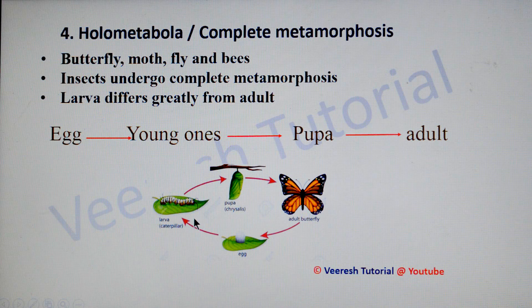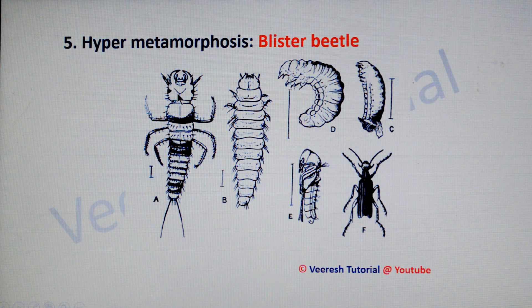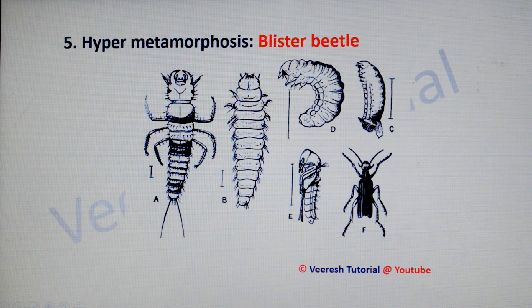Another special type of metamorphosis is hypermetamorphosis, which you can see in the blister beetle. This is a type of metamorphosis in which each instar in the larval stage differs with respect to appearance, habit, and habitat. The first stage is the triangulid stage which acts as a predator feeding on grasshopper eggs. The second stage is the campodeiform stage, which also acts as a predator. The third stage is the scarabiform larva which feeds on organic matter and later turns into a pseudo-pupal stage, which hibernates before pupation, and then the adult emerges to feed on flower parts.